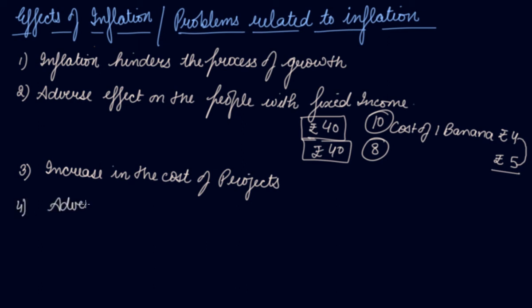Fourth, adverse impact on balance of payment. If there is inflation in your economy, your domestic goods have become costlier. If your domestic goods have become costlier, it will affect your exports in the international markets. International markets used to buy your goods at 10 rupees per unit, but now due to inflation, your domestic goods have increased to 15 rupees per unit. Do you think they will buy at 15 rupees per unit with such a high price, like 50% increase in price?